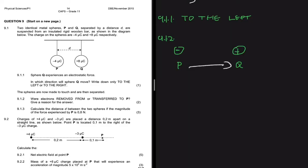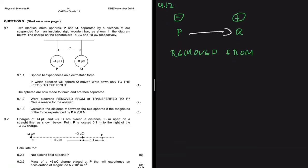When they touch, electrons are going to be transferred from sphere P to sphere Q. So the answer to 9.1.2 is that electrons are removed from sphere P to sphere Q, since sphere P has a higher concentration of electrons — it is more negative — compared to sphere Q. Electrons are what carry the negative charge.